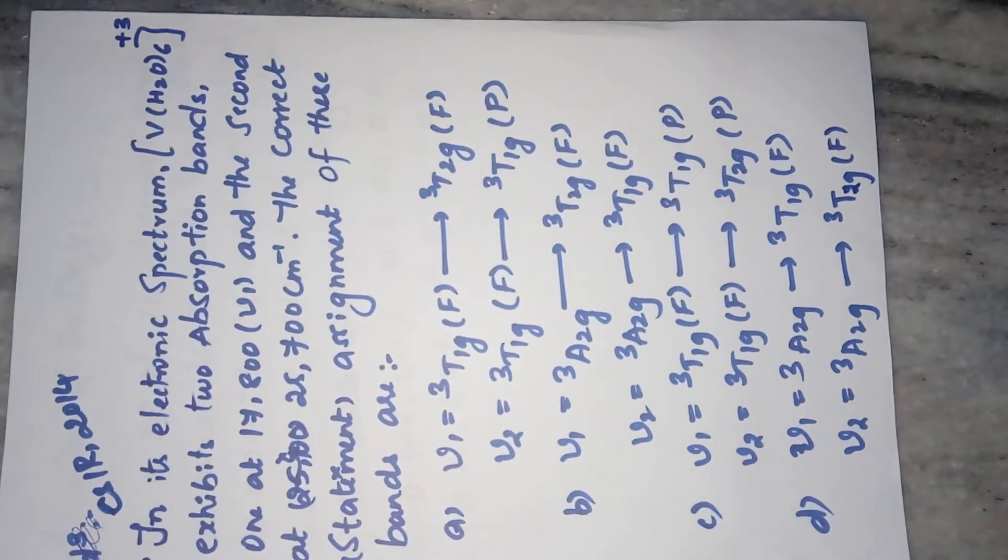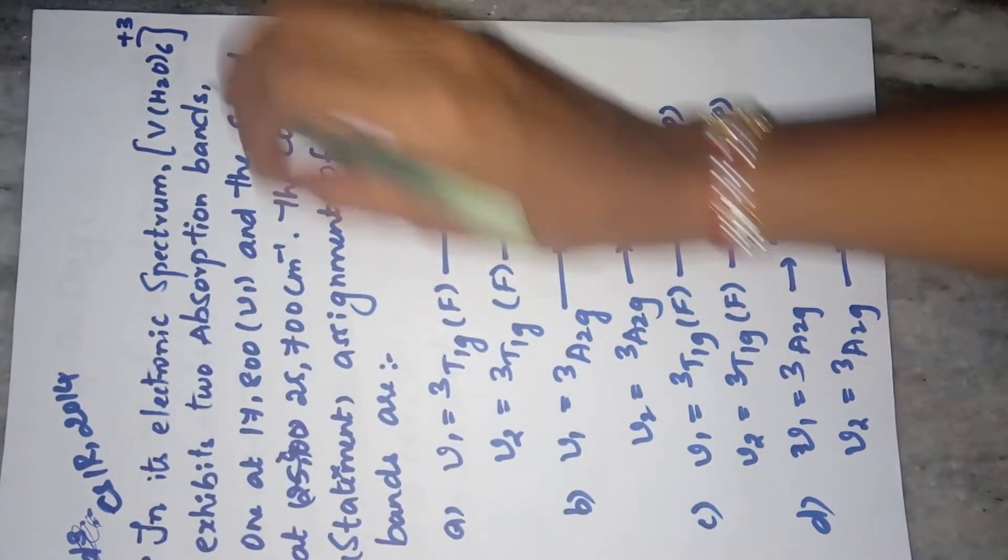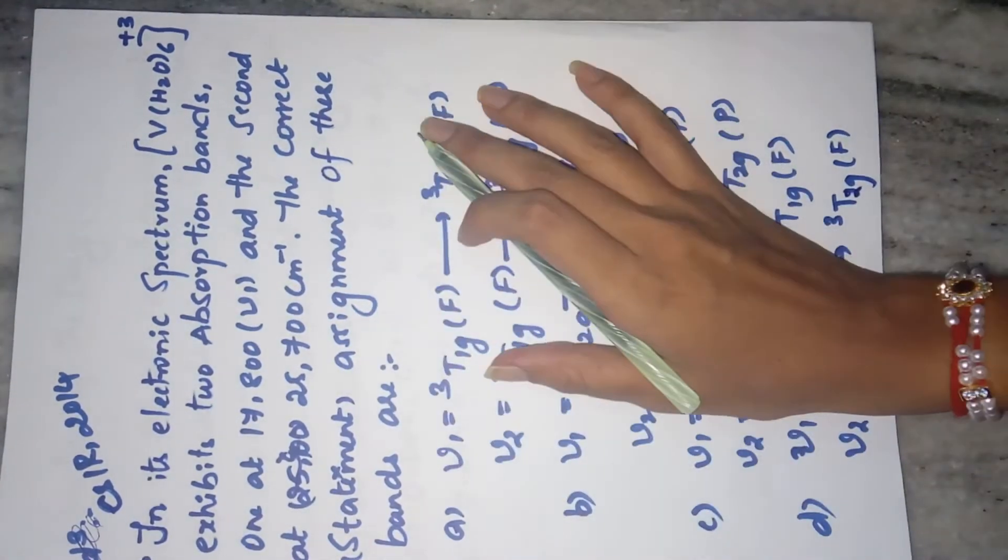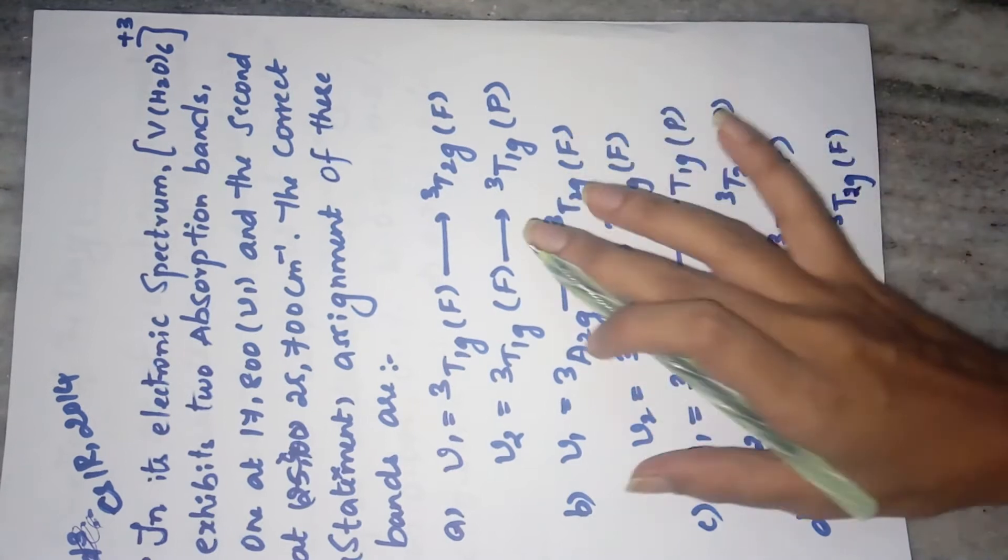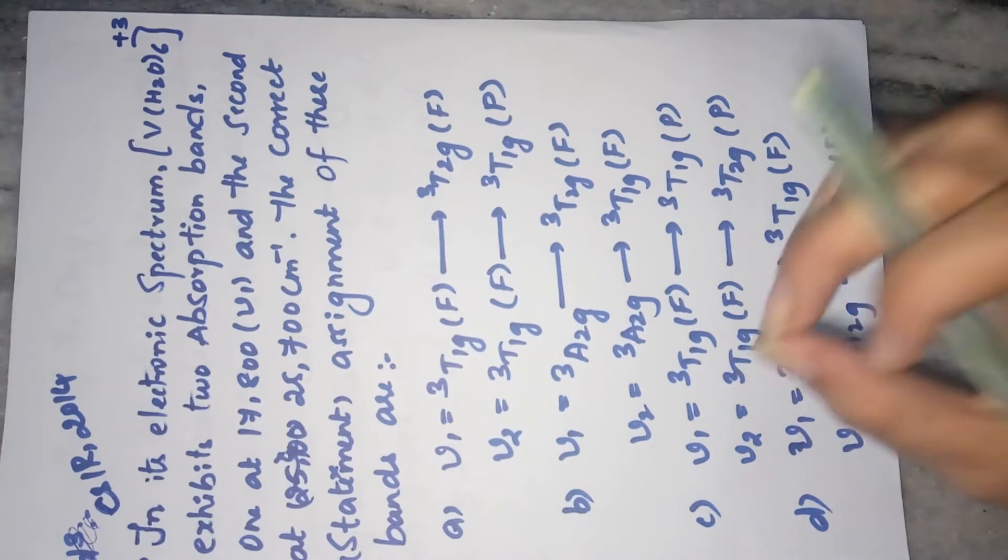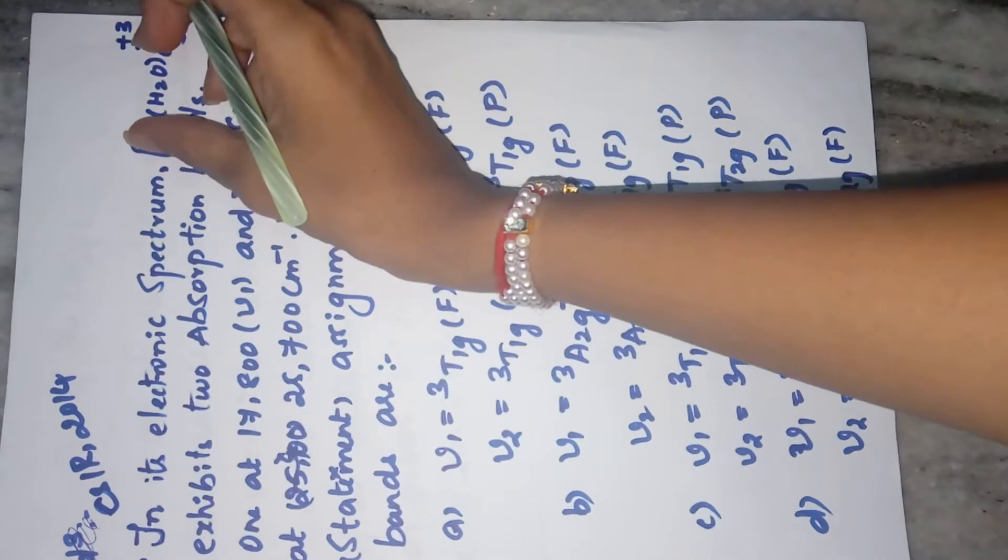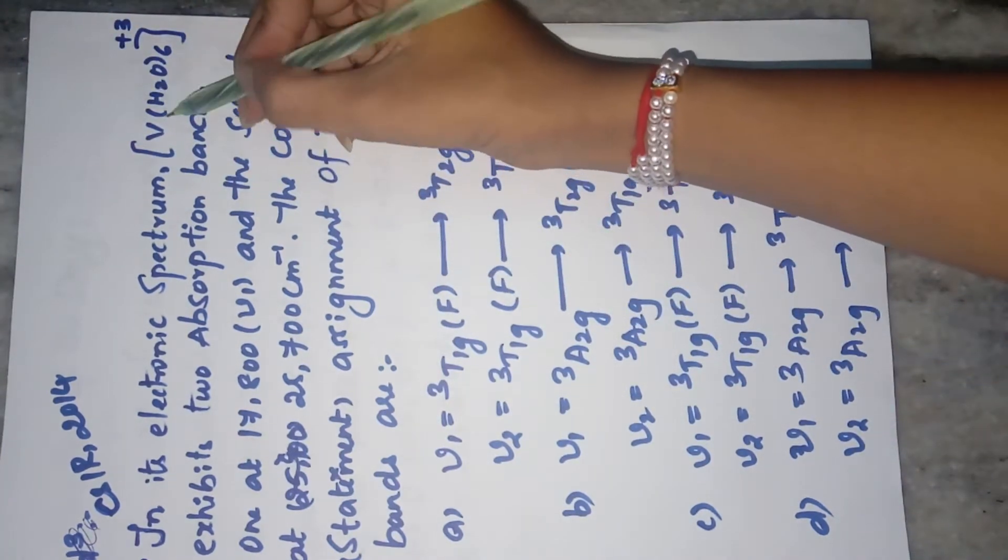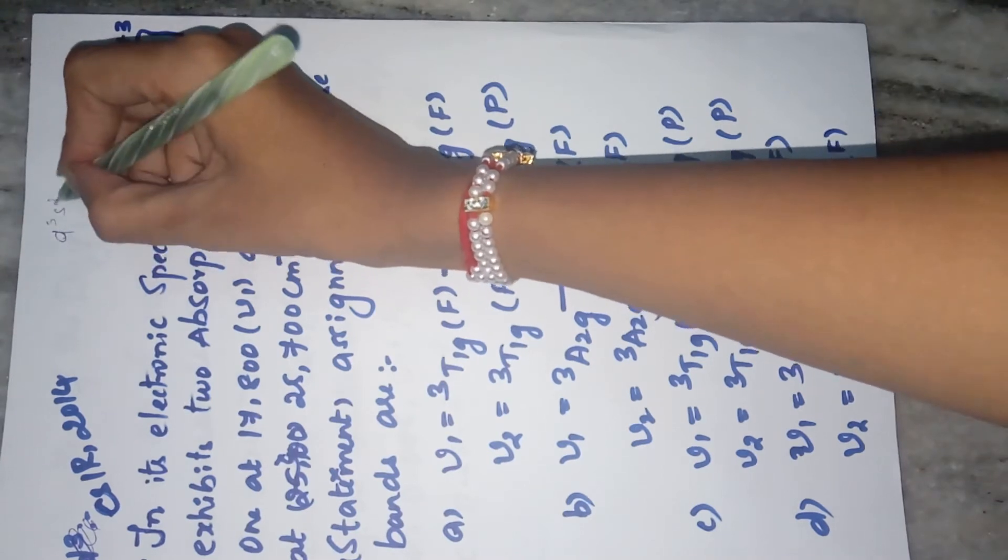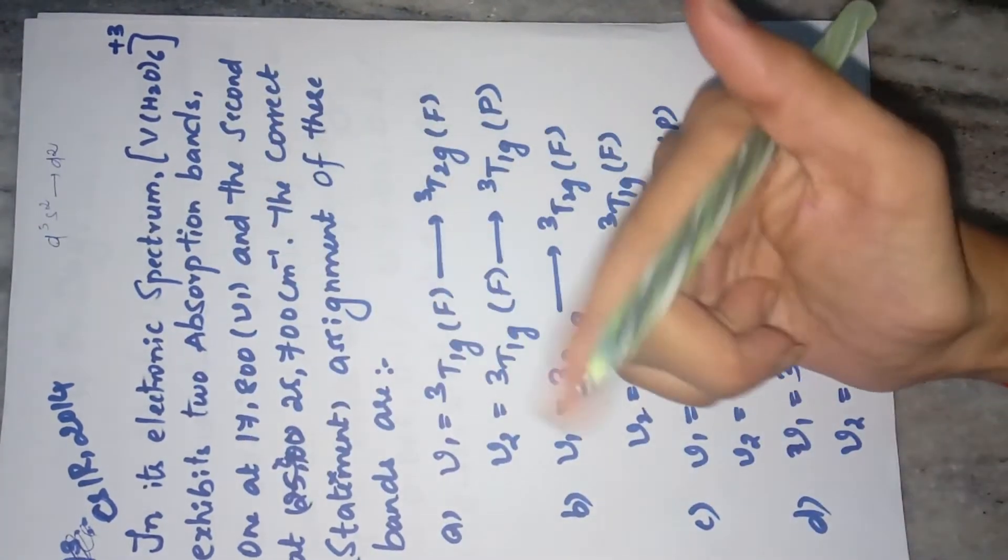The question is: in its electronic spectrum, the vanadium complex is given. It exhibits two absorption bands and the correct assignment of these bands are right. These are the options given. Now you can actually eliminate two options if you know what is the lowest energy state for this particular configuration. Just look at the configuration. It is vanadium with plus three state. So vanadium is actually d3 s2. If you remove three electrons it becomes d2. So what you have to do, you have to draw the Orgel Diagram of d2 configuration.